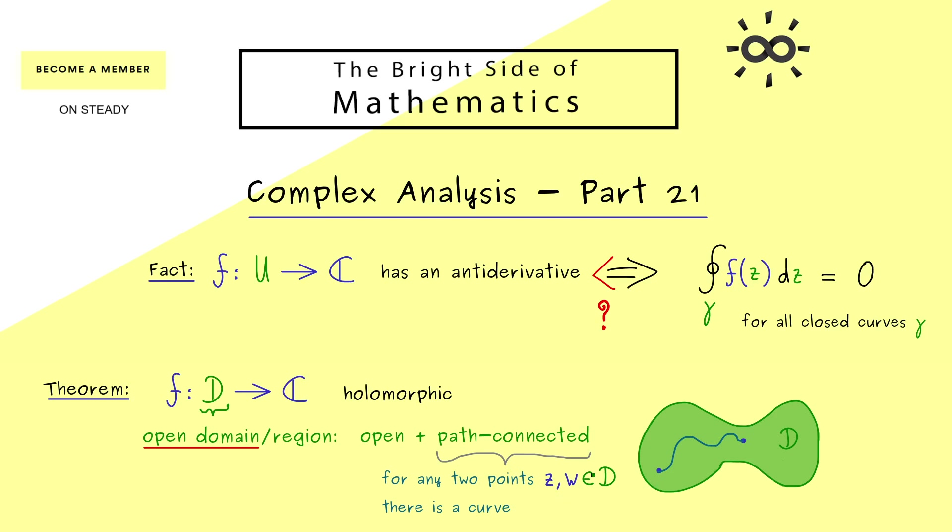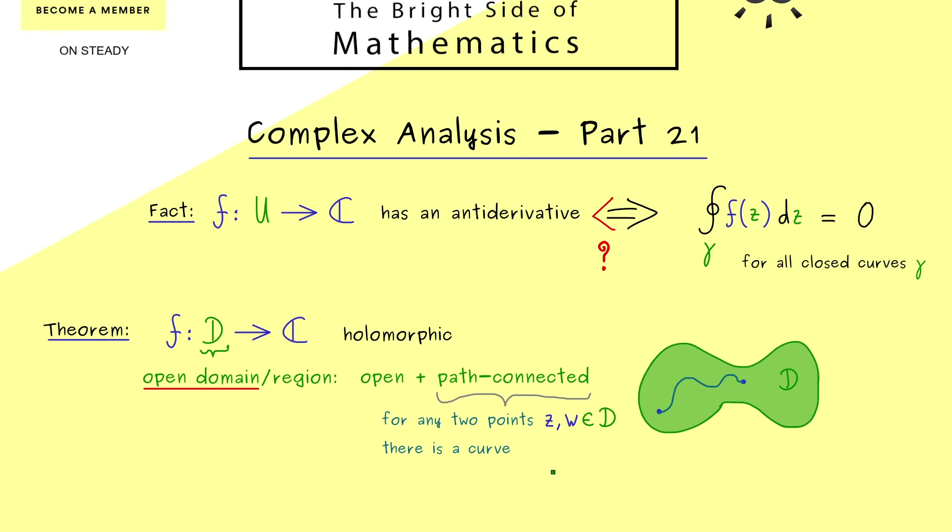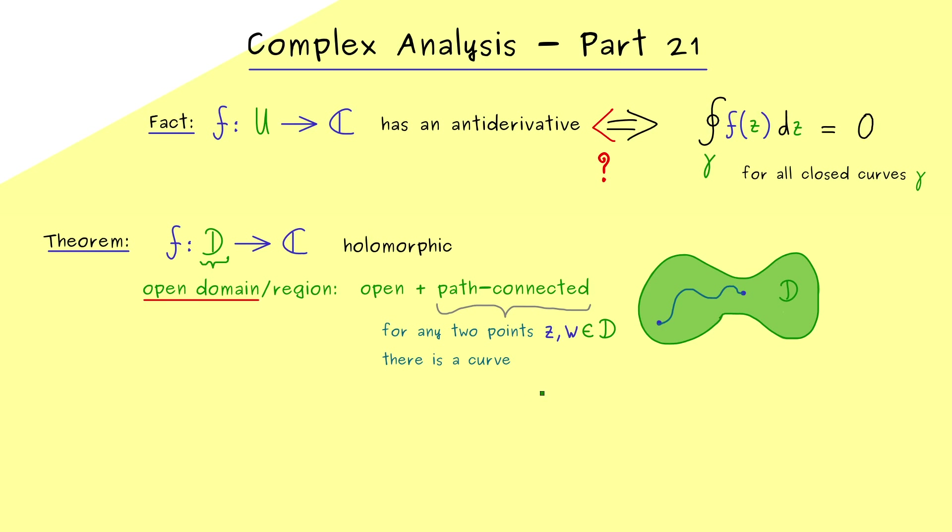More precisely, it means if you take two points z and w from D, you find a curve gamma. And then this gamma has the starting point z and the end point w. And now this fact holds no matter which points z and w we choose, and therefore the set is called path-connected.